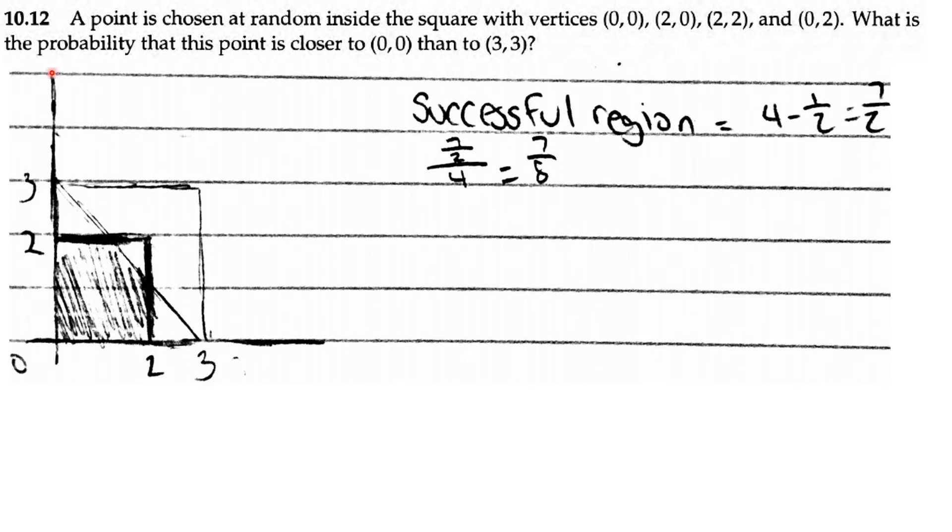AOP counting and probability, problem 10.12. A point is chosen at random inside the square with vertices (0,0), (2,0), (2,2), and (0,2). What is the probability that this point is closer to (0,0) than to (3,3)?